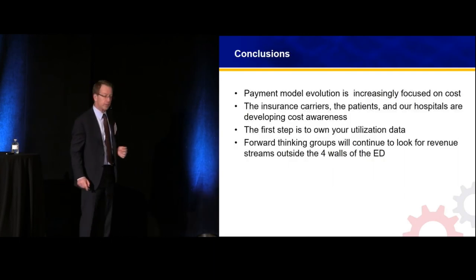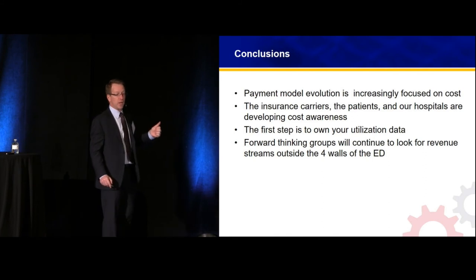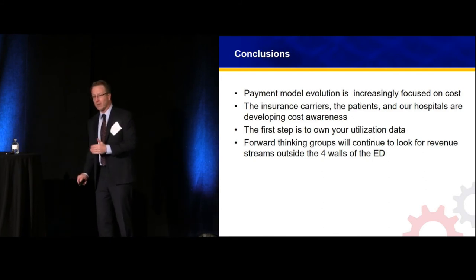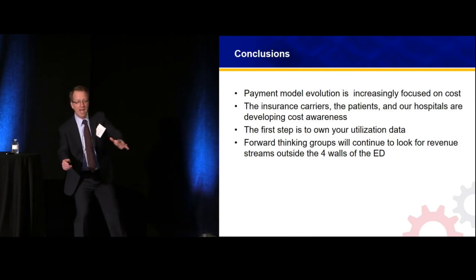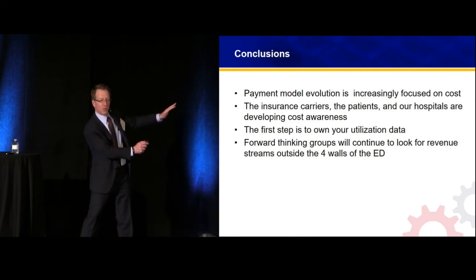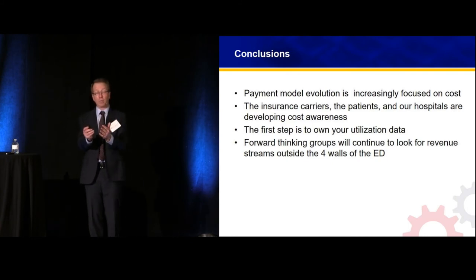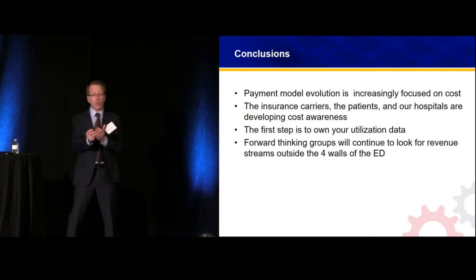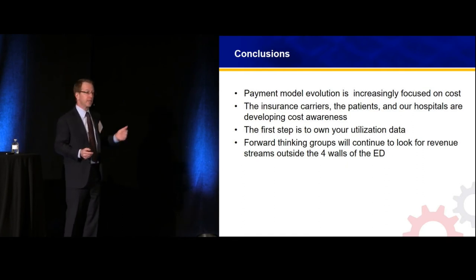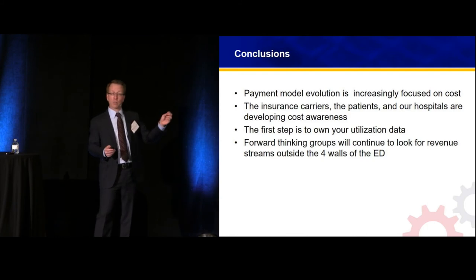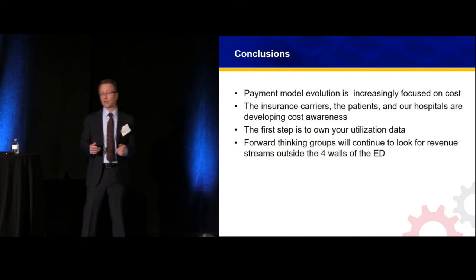A couple of conclusions: payment model evolution is coming from the federal government in incredible fits and starts. The Merit-Based Incentive Payment System got rid of the sustainable growth rate formula. But in its place, we have a complex quality process where cost is a huge component. The insurance carriers — absolutely — that Anthem process and website is very slick, and patients will be using it.